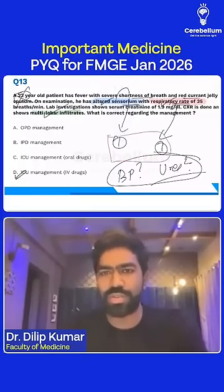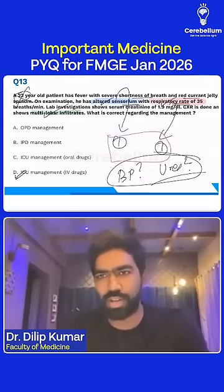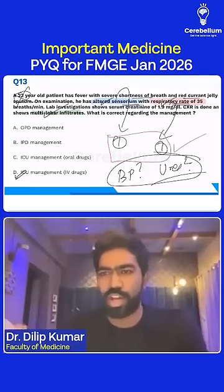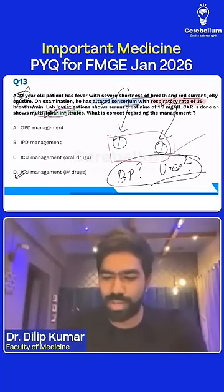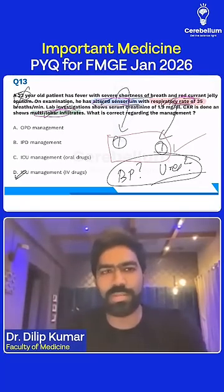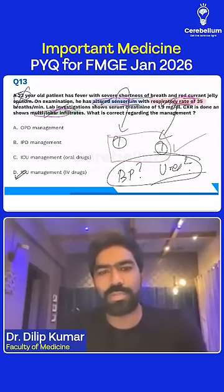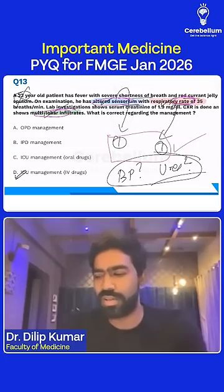If you say the score is only 2 based on the given data, you would put the patient in IP. But think logically — a person having multilobar infiltrates, altered sensorium, and severe tachypnea, you want to put in IP? Even the ward staff will not accept the patient. If the patient is in altered mental status and having severe tachypnea, keeping them in a ward with high flow oxygen is 100% not possible. So logically, this is based on clinical reasoning.